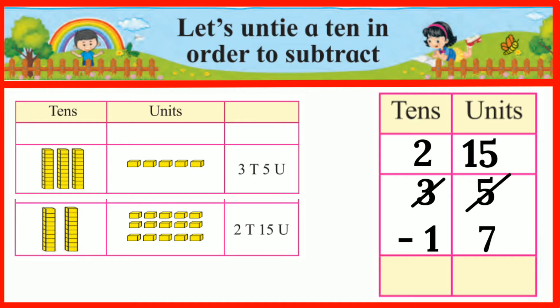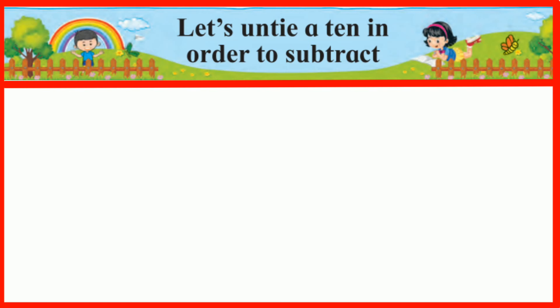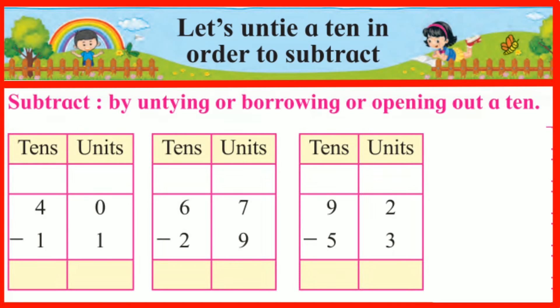8 units will remain after reducing 7 units from 15 units. Next, we reduce one 10 from two 10s — one 10 will be left. So the answer is 18. Subtract by untying, or borrowing, or opening out a 10.